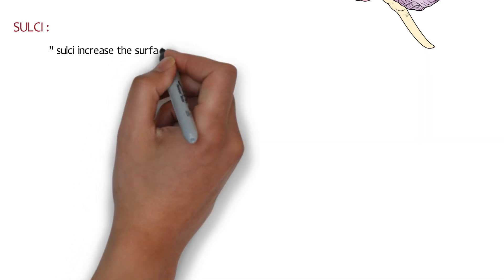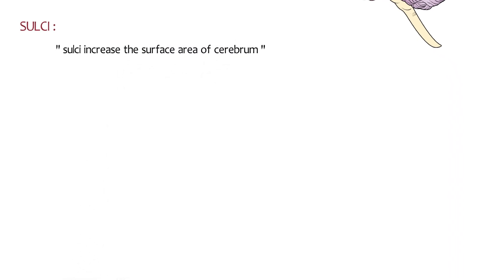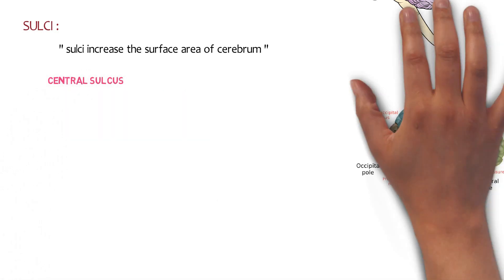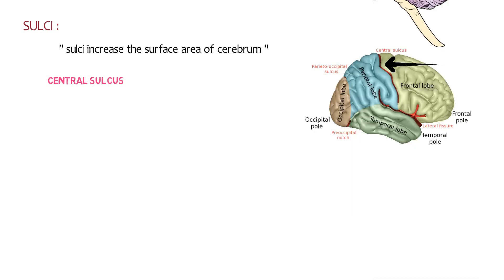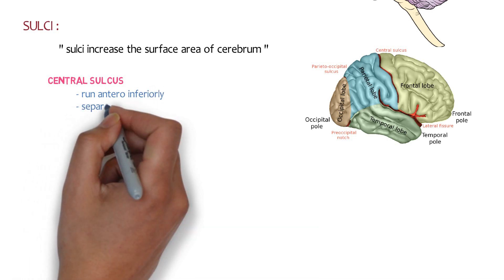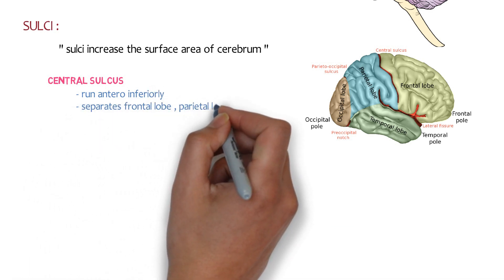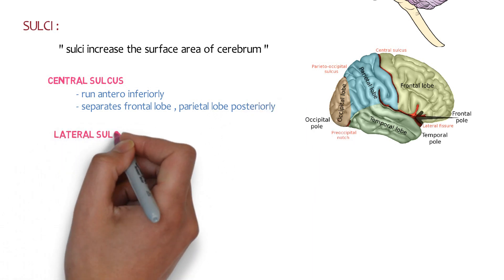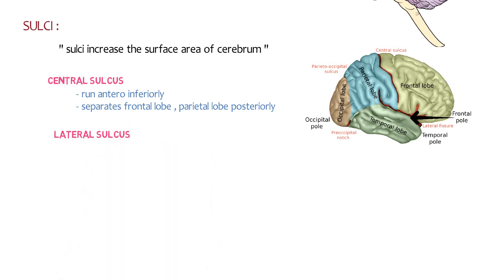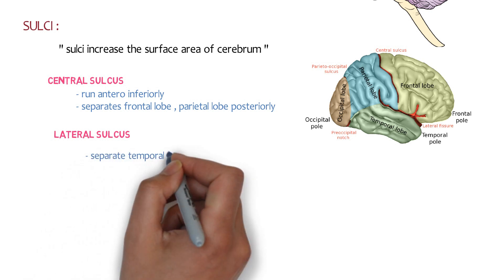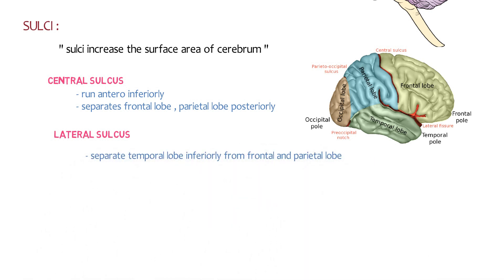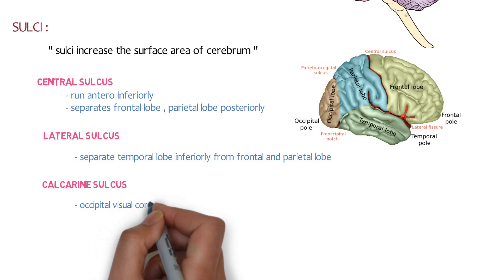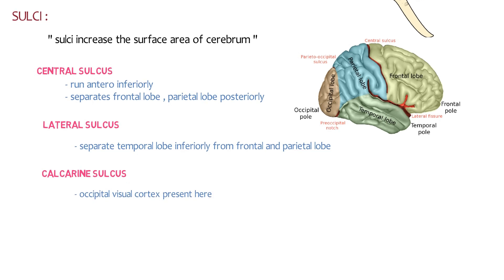Sulci increase the surface area of the cerebrum. The first important sulcus is the central sulcus, which runs anteroinferiorly and separates the frontal lobe from the parietal lobe posteriorly. The next is the lateral sulcus, which separates the temporal lobe inferiorly from the frontal and parietal lobes. Then there is the calcarine sulcus, which contains the occipital visual cortex.